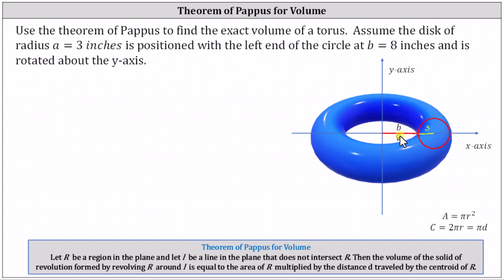Now let's review the theorem of Pappus. Let R be a region in the plane and let L be a line in the plane that does not intersect the region R. In our case, the region R is the circle and the line L is the y-axis. Then the volume of the solid of revolution formed by revolving R around L is equal to the area of R multiplied by the distance D traveled by the centroid of R.